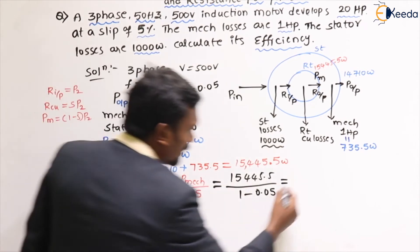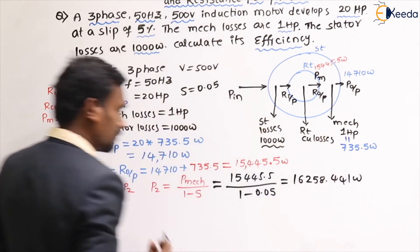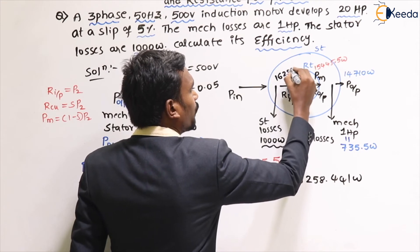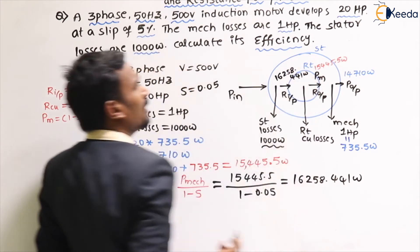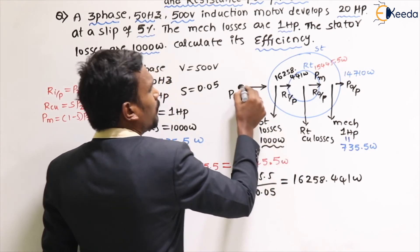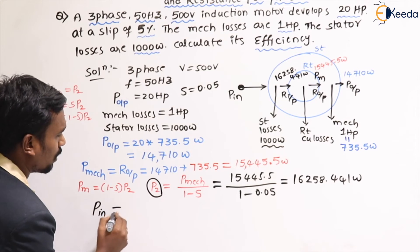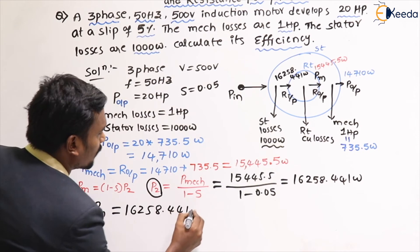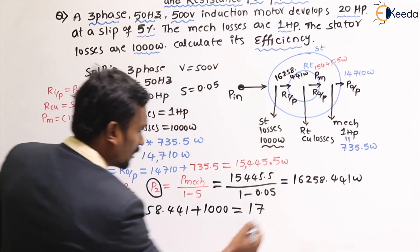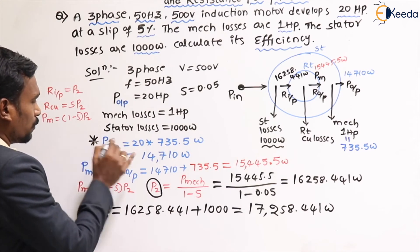Calculating: P₂ = 15,445.5 ÷ 0.95 = 16,258.41 watts. This is the rotor input. Now, power input to the machine equals rotor input plus stator losses: 16,258.41 + 1000 = 17,258.41 watts.